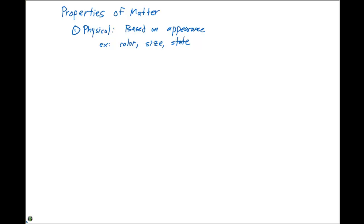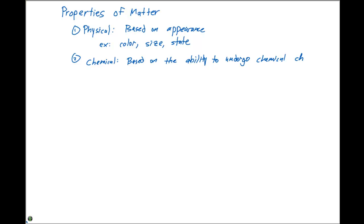The second classification of properties is chemical properties. Chemical properties are based on the ability to undergo chemical change. Examples of this type of property are flammability and explosions.